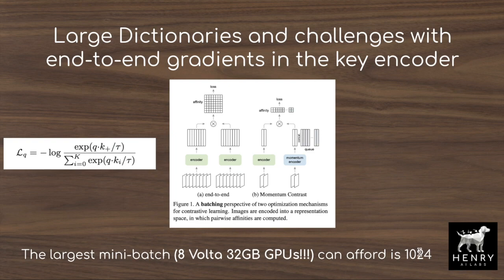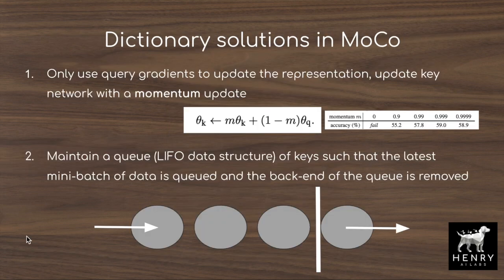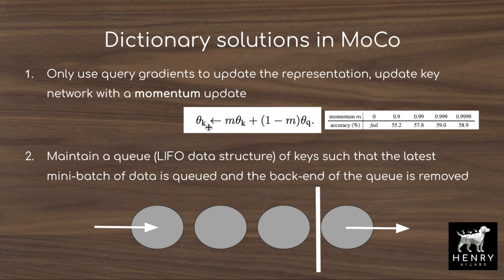The largest mini-batch a machine with 8 V100 32GB GPUs can afford is 1024, so you can't scale to the massive batch sizes SimCLR shows are beneficial. Solutions in MoCo include: first, using only query gradients to update the representation; second, updating the key network with a momentum update — weighting previous key parameters with the newly gradient-updated query parameters. Ablation studies show the momentum parameter is quite large, between 0.99 and 0.9999.